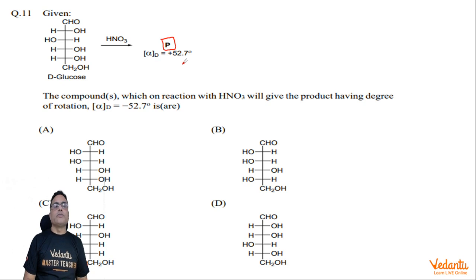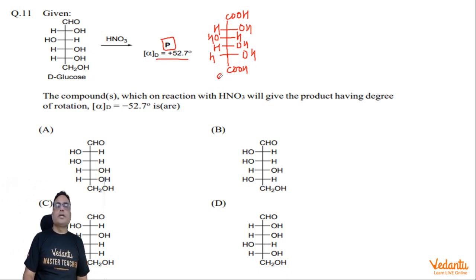So HNO3 converts this D-glucose into cyclic acid. Now they are asking which compound or compounds, on reaction with HNO3, will give the product having degree of rotation minus 52.7 degrees.